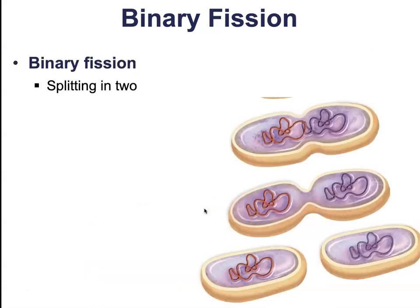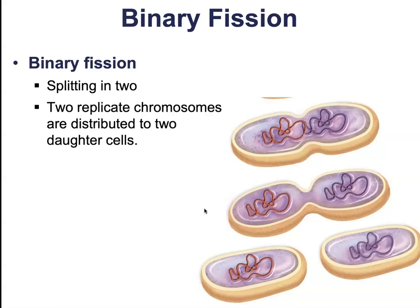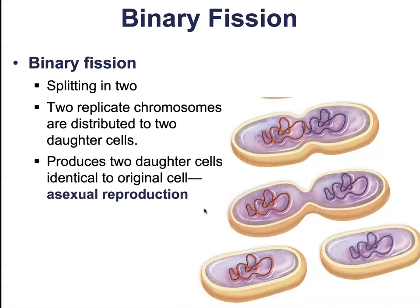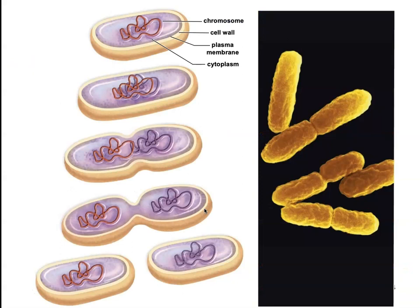Once we've replicated our DNA, we're going to undergo a process known as binary fission. Binary fission just means we are splitting in two. We take that single cell and split it into two cells. Those two replicated chromosomes are distributed to the two daughter cells, producing two daughter cells identical to the original. This is asexual reproduction because there's no combining of genetic DNA — we simply replicate and split in half.